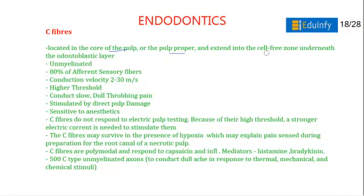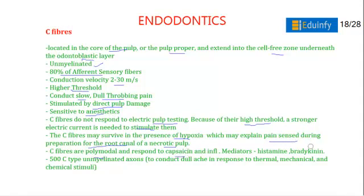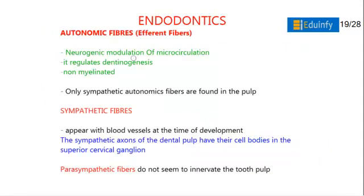C fibers are located in the core of the pulp (pulp proper) and extend into the cell-free zone underneath the odontoblastic layer. They are unmyelinated, forming 80% of afferent sensory fibers. Conduction velocity is 2 to 30 meters per second with a higher threshold value. C fibers conduct slow, dull, throbbing pain; they are stimulated by direct pulp damage and are sensitive to anesthetics. They do not respond to electric pulp testing and require a strong current to stimulate them. C fibers may survive in hypoxia — explaining pain during root canal preparation of a necrotic pulp. They are polymodal and respond to capsaicin and inflammatory mediators like histamine and bradykinin. There are approximately 500 C-type unmyelinated axons, conducting dull ache in response to thermal, mechanical, and chemical stimuli.